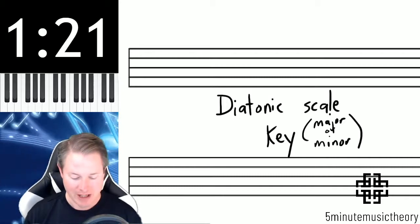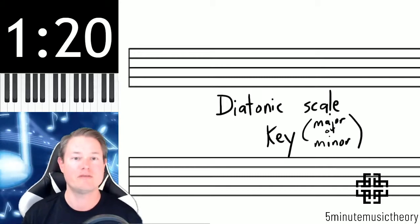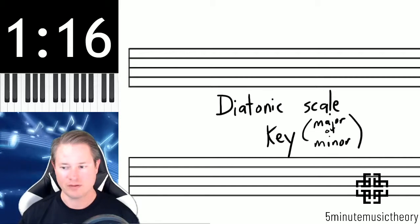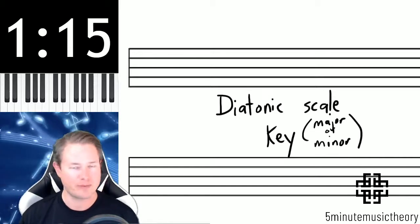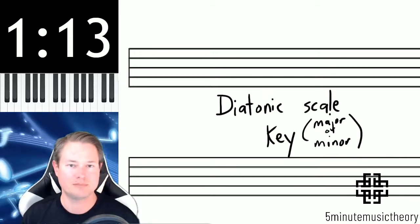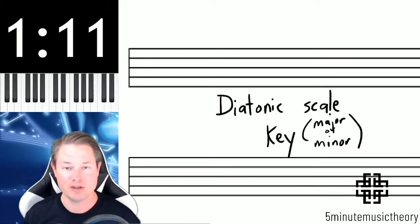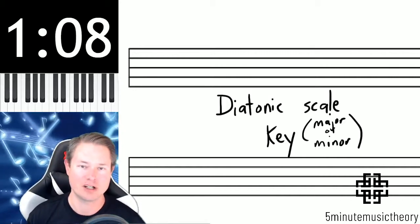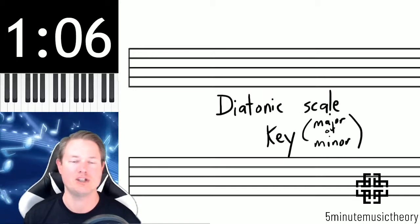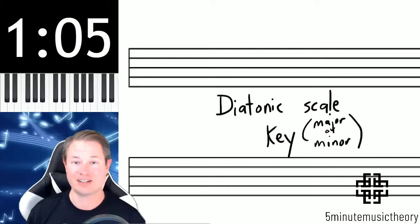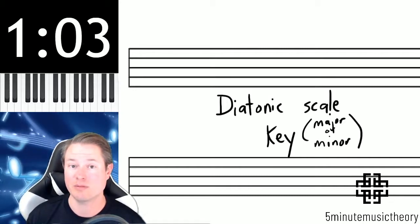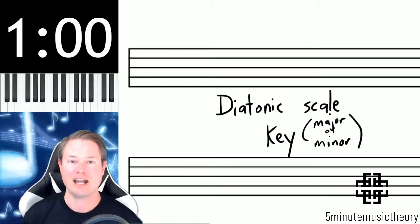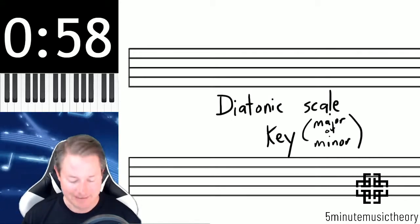Just to quickly review: major is the happy or bright sound when referring to groups of notes, pieces of music, and pretty much anything in music. Minor is the sad version instead of the happy major. A scale is a group of notes on which a piece of music is based. And last, diatonic has to do with being in a key. Thank you very much.